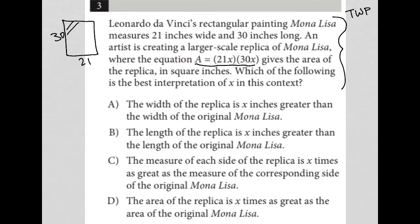because the area here would be 21 times 30. So if you're making a replica, you're going to multiply both the length and the width by some X value. So that would make sense that A equals 21X times 30X.